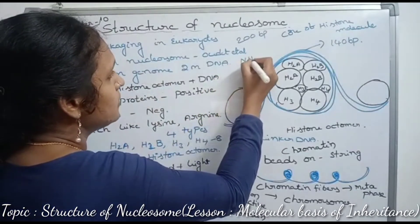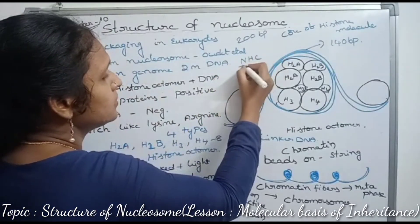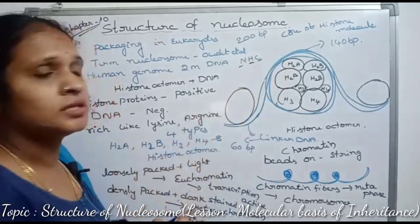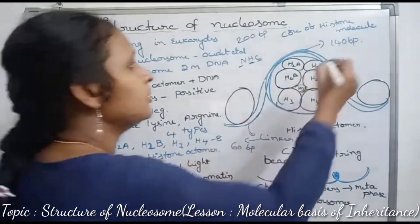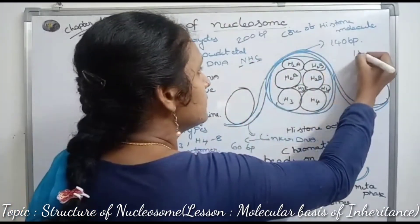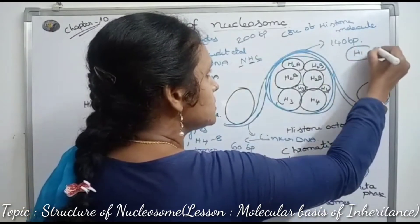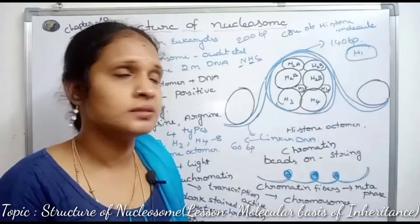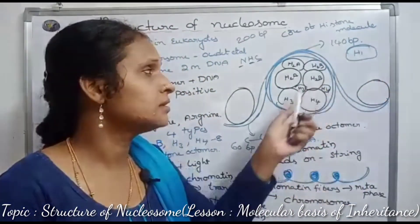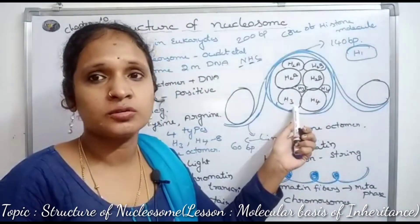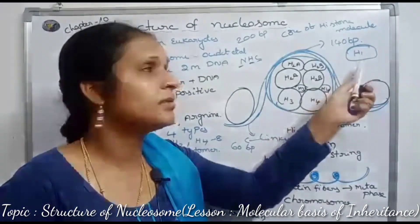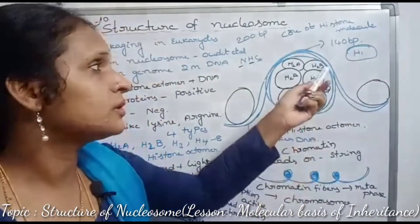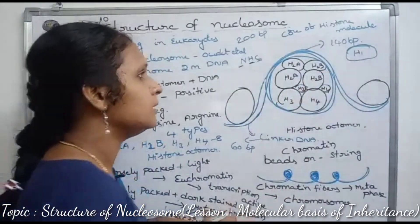These additional proteins are called non-histone chromosomal proteins (NHC). For example, H1 is a non-histone protein. It is non-inheritable, so it does not combine with the histone octamer, but it is required as an additional protein.